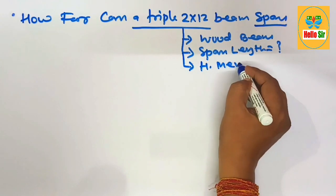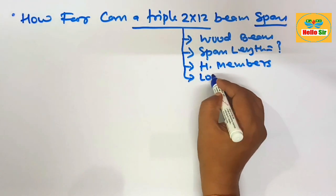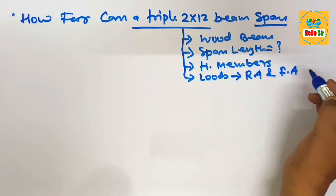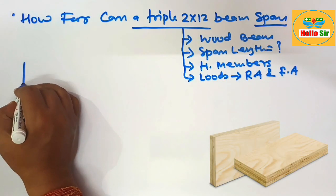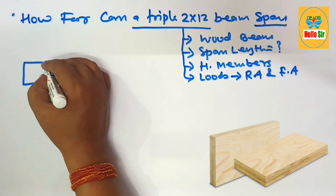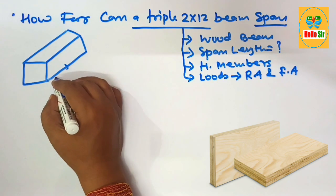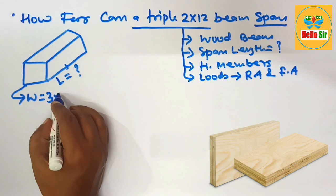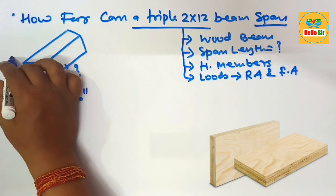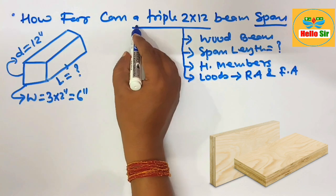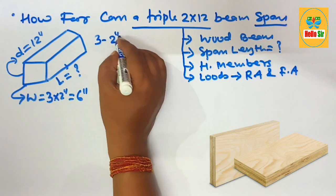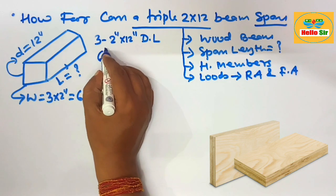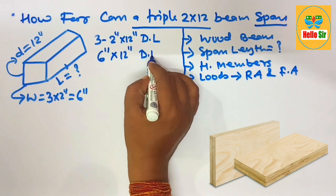This beam is a horizontal member in a roof framing system, and it supports load conditions that may come from the roof area and the floor area. Here we make a rough diagram to understand the different dimensions. The width section of the wood beam is triple, meaning three multiplied by two inches, equal to about six inches, and the depth of this beam is about 12 inches. A triple 2 by 12 beam means three pieces of 2 by 12 dimensional lumber are nailed together to form it.